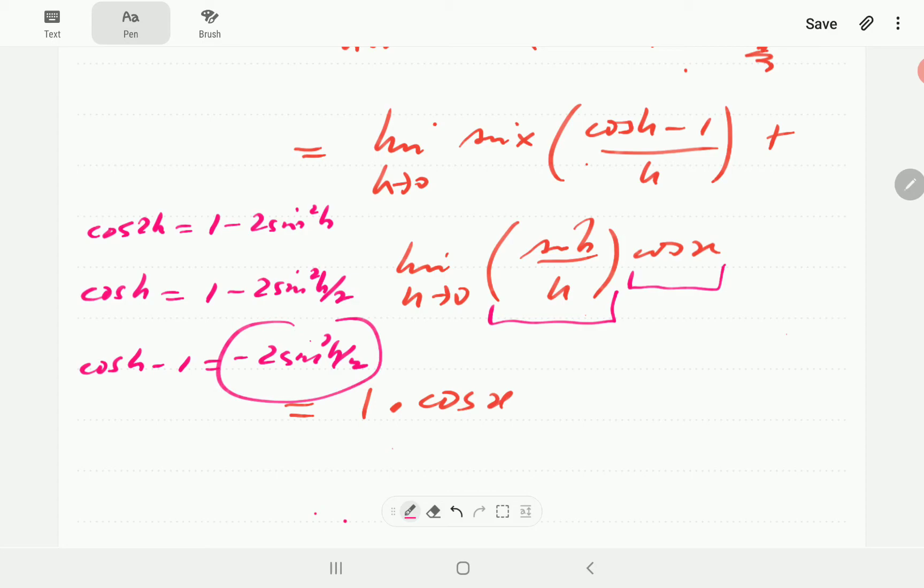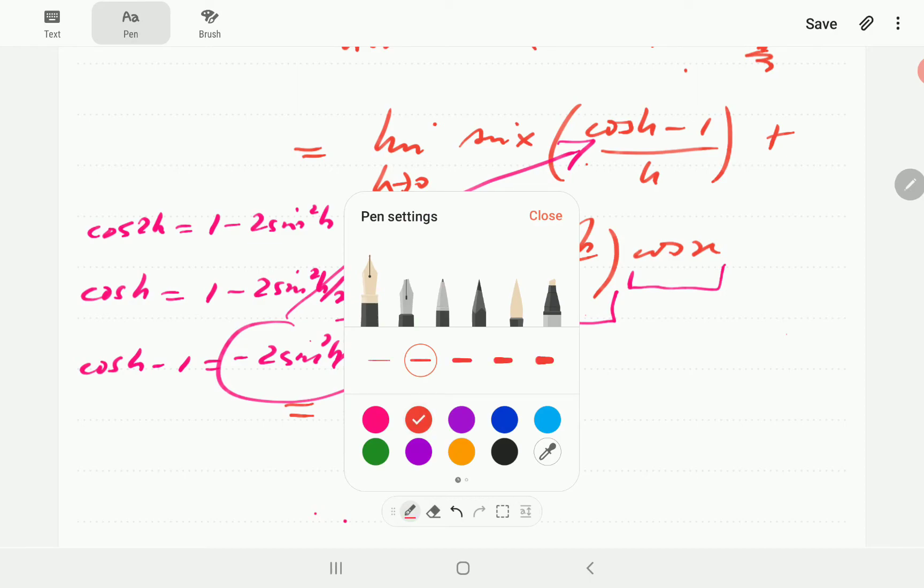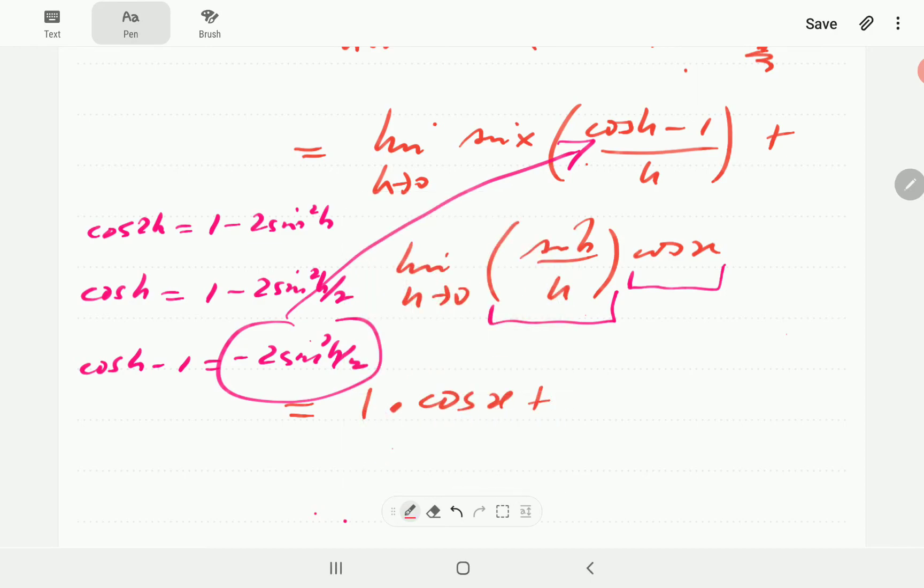So we're going to take this and plug it into that numerator there. So our expression is now going to be plus the limit as h goes to 0 of sine x, which is this one. Then negative 2 sine squared h over 2 divided by h.